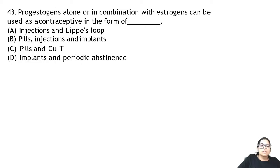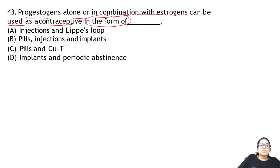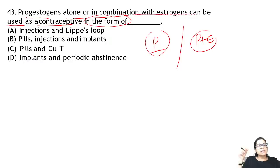Question 43: progesterone alone or in combination with estrogen can be used as a contraceptive in the form of an oral pill, injection, or subcutaneous implant — where hormone is released slowly over time.